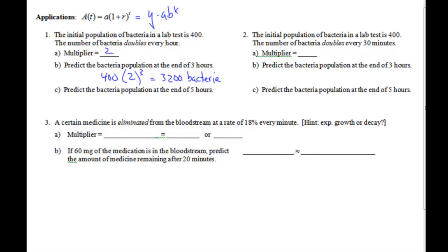See if we want to predict the bacteria at the end of 5 hours. Well, we start with 400. We are doubling again. And this time after 5 hours, raise it to the 5th power. Hit your calculator button. You should have 12,800 bacteria. Go ahead, hit pause, try number 2. See you in about 45 seconds.